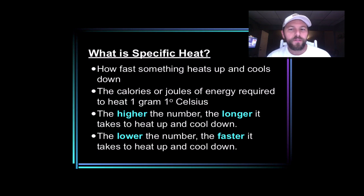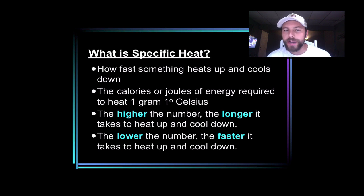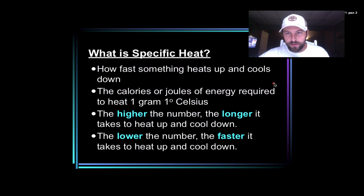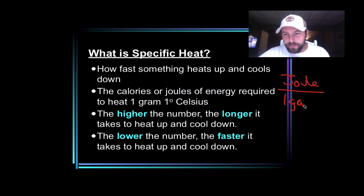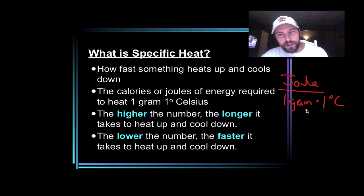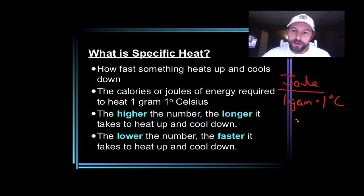Specific heat is how fast something heats up and cools down. The units we use for this are a little bit odd to look at. It's actually a joule per gram degree Celsius. So a little bit odd — we're not used to looking at units like this with multiple units down on the bottom, on the denominator, but here it is.